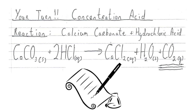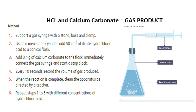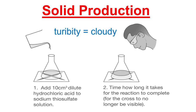You need to be able to adapt on the day — CO2 gas experiments work the same way. Now on to solid production. You need to know the word turbidity — it means cloudy. This is when one of your products is a precipitate or solid, making the solution cloudy. You put a cross beneath the flask, and when you can no longer see the cross you stop the stopwatch. That is how you measure the rate of reaction, though it's not very precise.